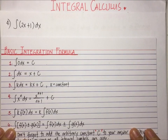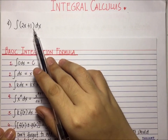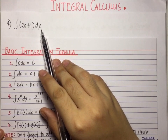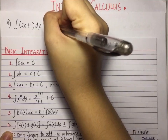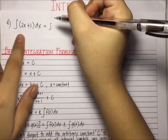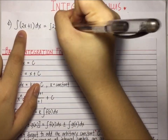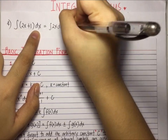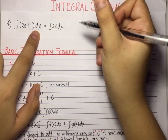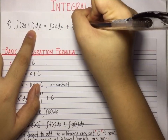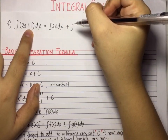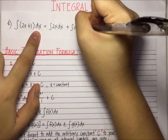For number 4, find the integral of 2x plus 1 times dx. We apply the sum and difference rule, theorem number 6, which means to integrate each term separately. So we have the integral of the first term, 2x dx, plus the integral of the second term, 1 times dx or dx. Remember, the integrand is always a differential.